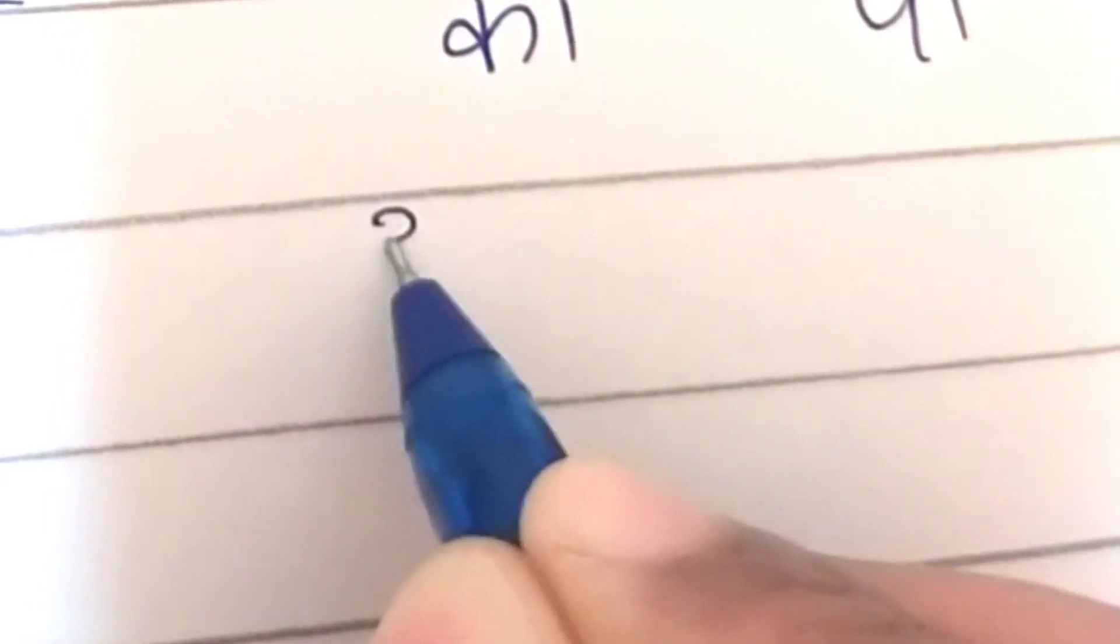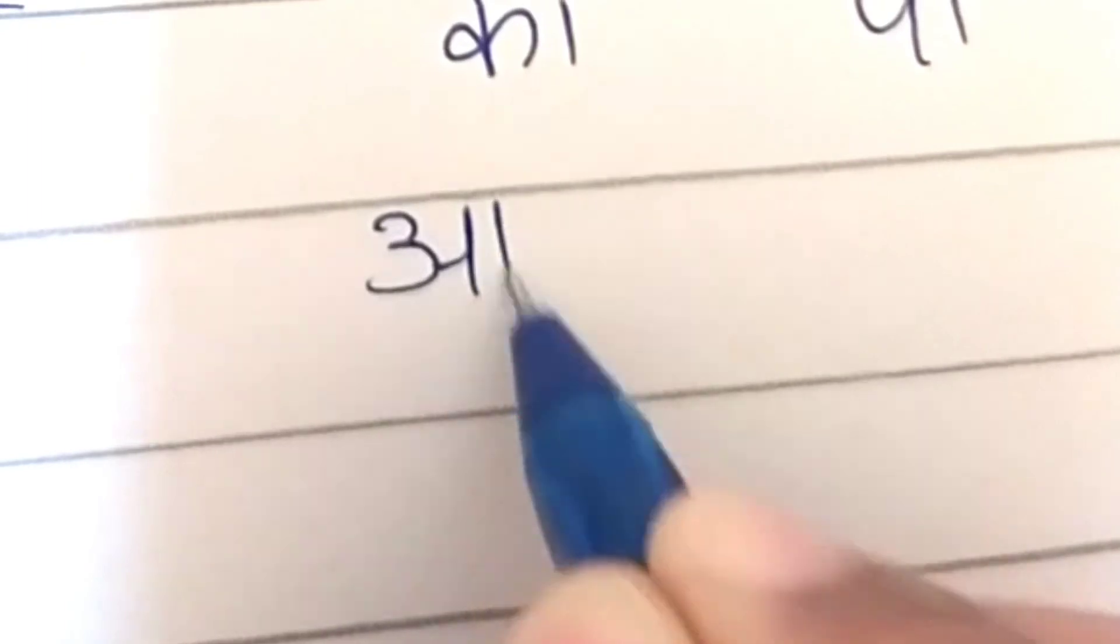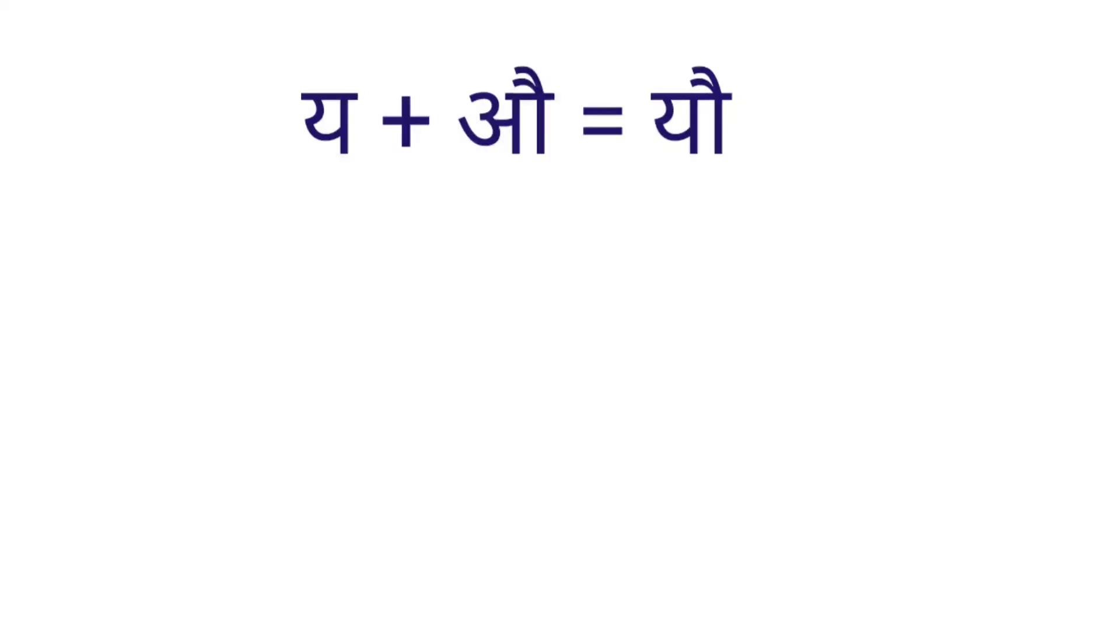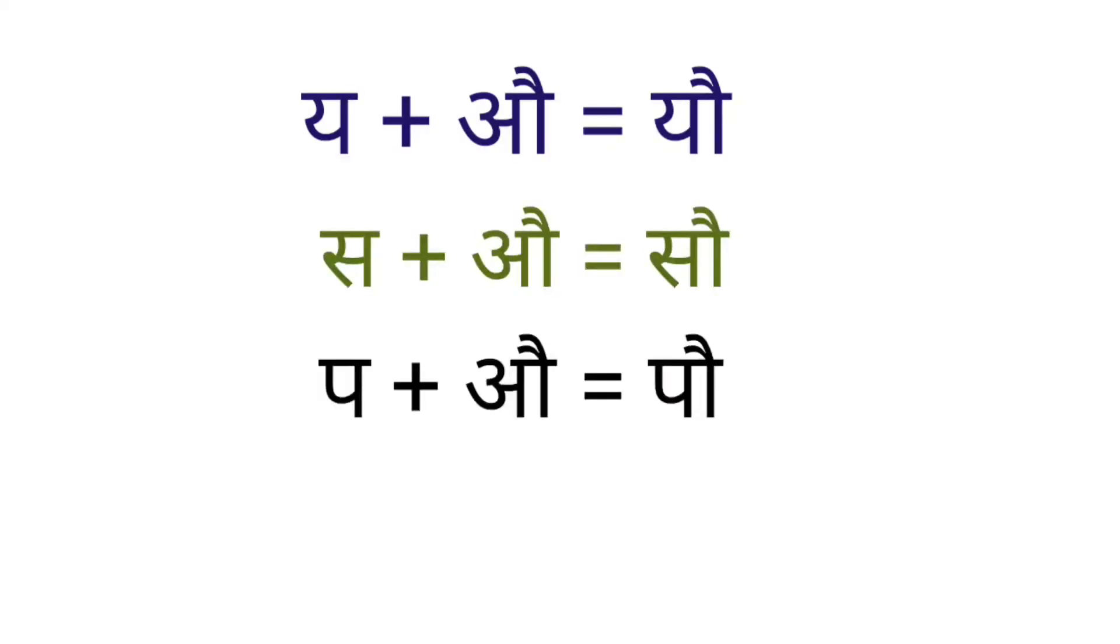Next vowel is A. This is the symbol of A. Yau, Sau, Pau, Tau, Kau.